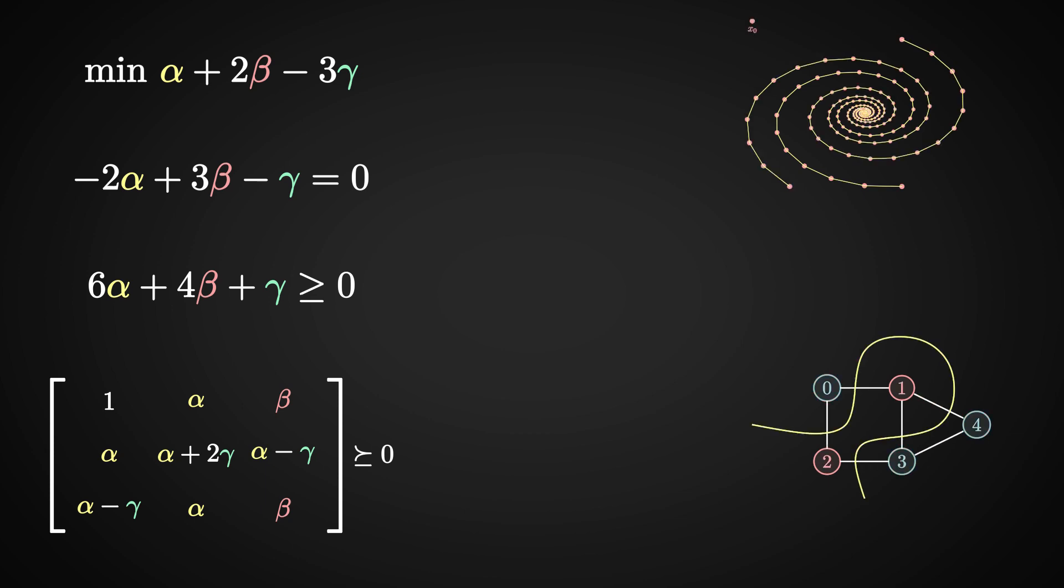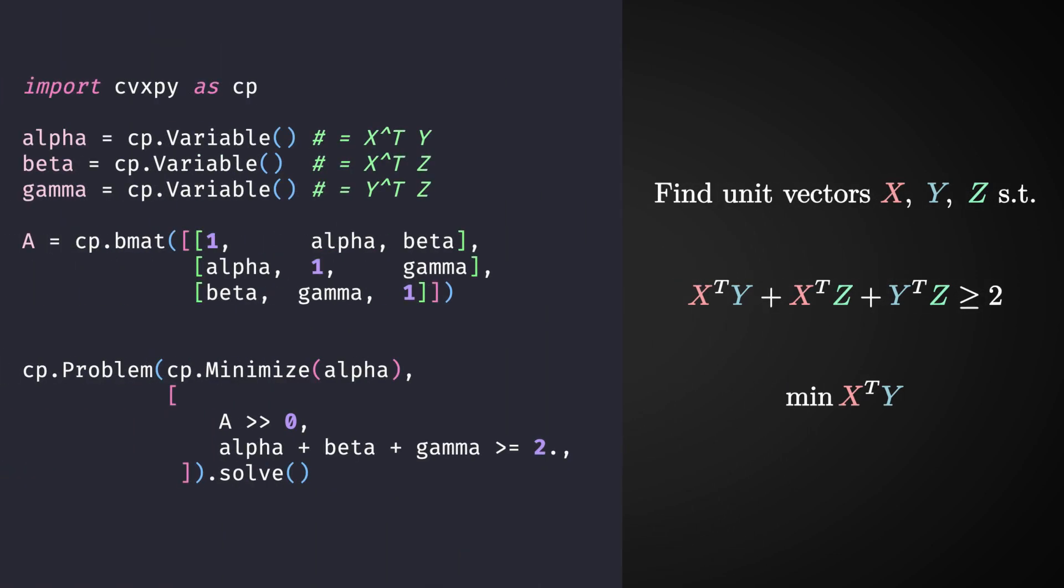But we can get some appreciation for them right now by looking at a variant of our toy geometry problem. For example, let's say we want to find three unit vectors x, y, and z whose sum of inner products is larger than 2, such that the inner product between say x and y is minimal. Good luck solving this problem by hand. But if you know about semi-definite programming, you can easily adapt the code we saw before to specify the right objective function and the right constraints, and call the solve method.